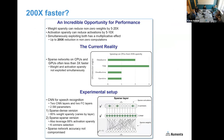Sparse networks are nothing new — we've known about them for a while. They differ from dense traditional networks in two important ways. We can remove interconnections between neurons: in a typical dense network, each neuron is connected to every neuron in the previous layer. In a sparse network, each neuron is only connected to a subset. This is termed weight sparsity. We can also limit the number of neurons that can become simultaneously active in any given layer — this is termed activation sparsity.